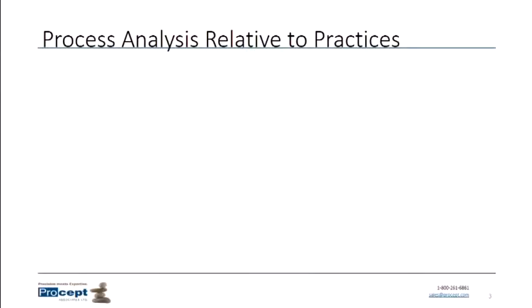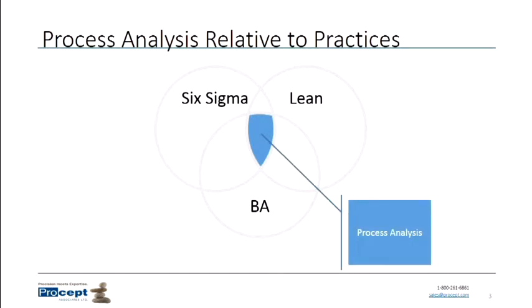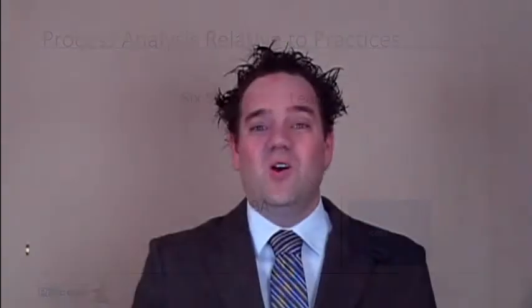Process analysis is not an activity unique to business analysis. We also see it involved in other methodologies that we tend to associate more with quality — Six Sigma methodology, lean methodology, and business analysis all have this overlap, which is process analysis. All three of those methodologies are concerned with analyzing processes and improving them. Because those other methodologies are also performing process analysis, what we actually do in business analysis is borrow their techniques. We don't need to reinvent the wheel.